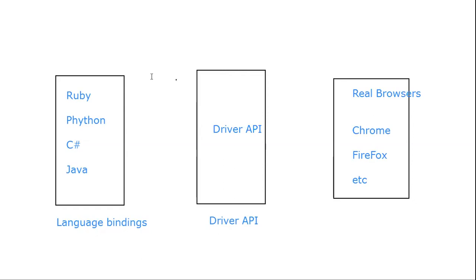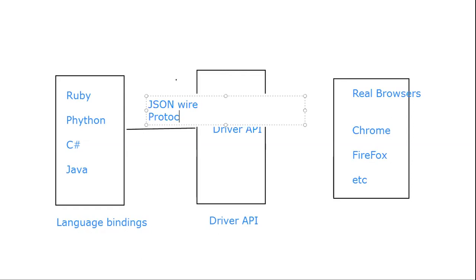Language bindings and driver API are connected with the help of the JSON-Wire protocol. This is your JSON-Wire protocol, and this is your driver API. The driver API is the interface between your real browsers and your language bindings. Whenever we write the code in language bindings — in Eclipse — this code is converted with the help of the JSON-Wire protocol and it communicates with the browser drivers. The driver API blocks are also known as the browser drivers.